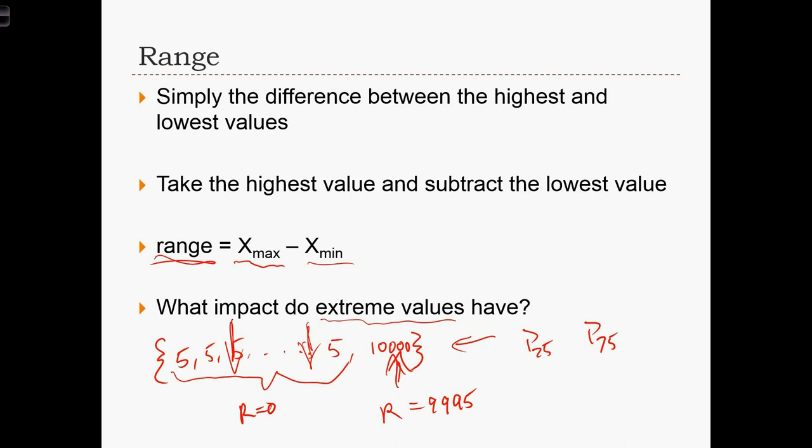So in each case, we have P25 equal to 5 and P75 equal to 5. So here, the IQR is equal to 0.